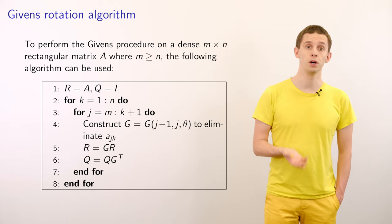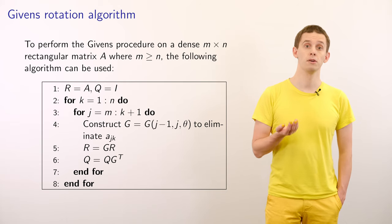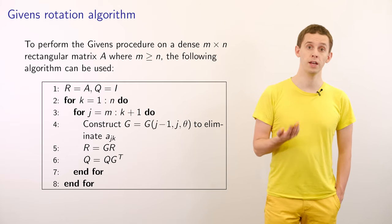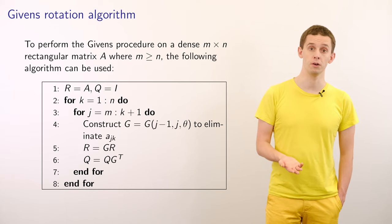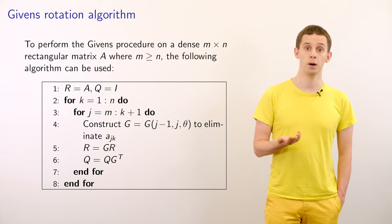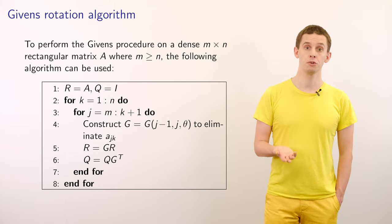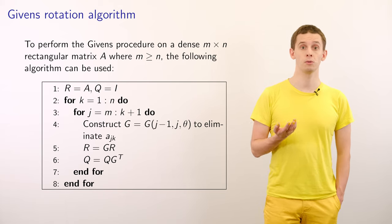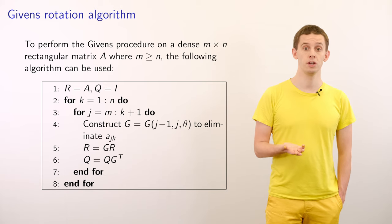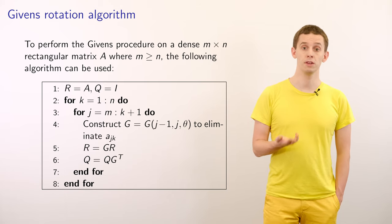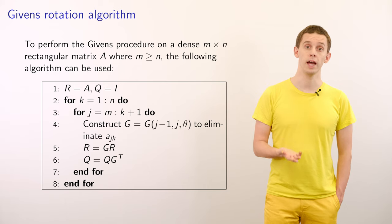We'll loop over all of the columns k from 1 to n, and then we'll loop over all of the entries below the diagonal in the k-th column from m down to k plus 1. And we'll construct our Givens rotation matrix G with an angle theta that will eliminate the entry A_jk.